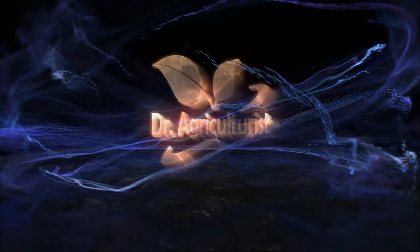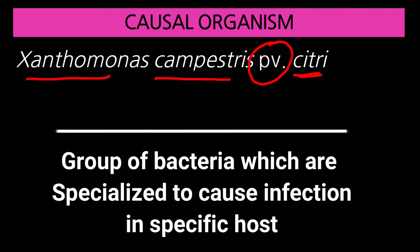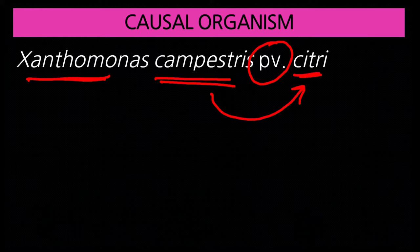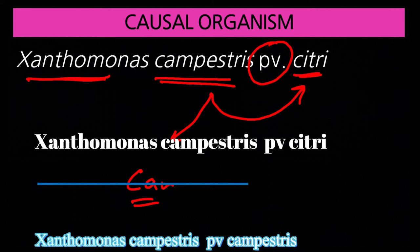Citrus canker is caused by a bacteria Xanthomonas campestris pathovar citri. Pathovar means a group of bacteria which are specialized to cause infection in a specific crop. Xanthomonas campestris is a bacteria, and within it, a population that causes disease in citrus is called pathovar citri. Some bacteria cause black rot disease in cabbage — that is pathovar campestris — while Xanthomonas campestris pathovar citri causes citrus canker.